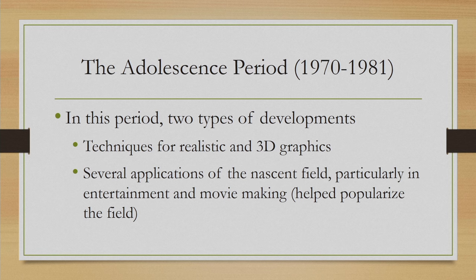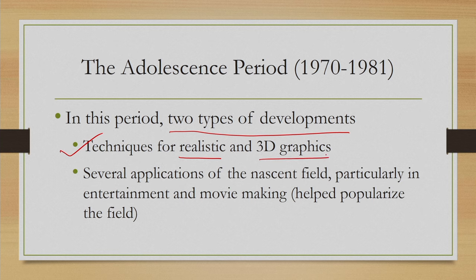The microprocessor impacted the computer graphics field in a significant way by making computations less costly and affordable. As a result, in this period several interesting things happened. Primarily two types of developments took place: one is techniques for realistic 3D graphics, and several applications were developed during this phase, particularly in entertainment and movie making. As a result of those applications, people started noticing the potential of the field and invested more time and money.